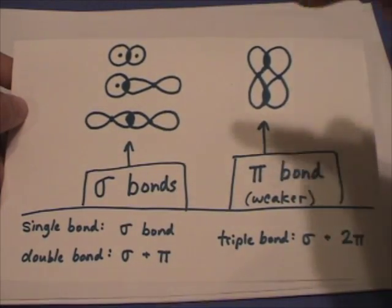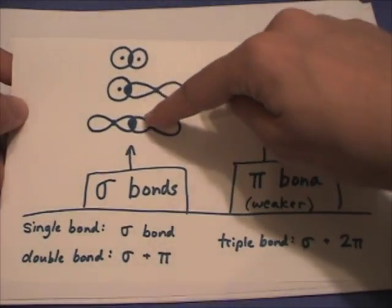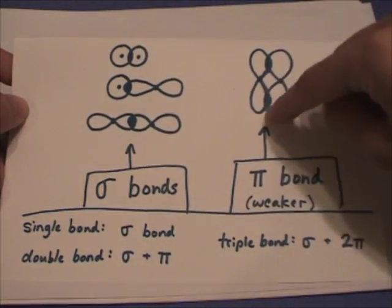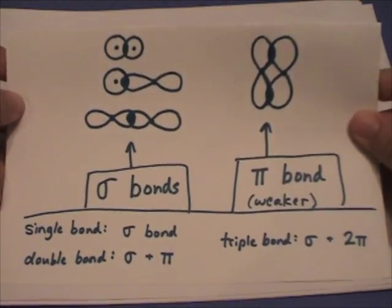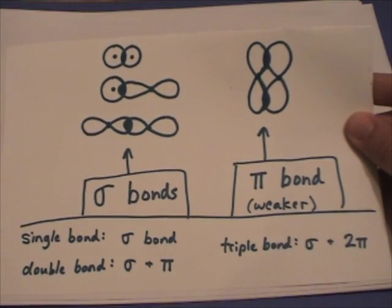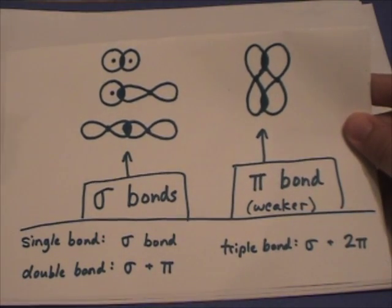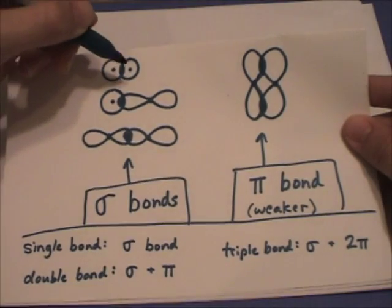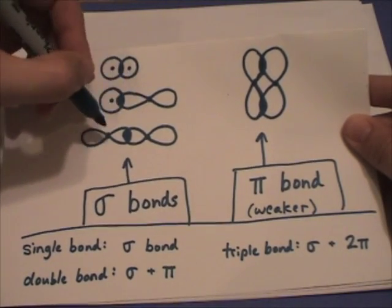Now I want you to look at these three different types of sigma bonds, and then this pi bond, and see if you can tell me where the electron overlap is in relation to the nuclei. And again the nuclei are right here and here, there, there, there, there.